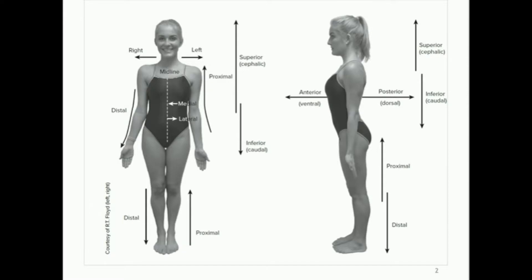If we're referring to something being closer to the head or further from the head towards the feet, we use superior and inferior respectively. If something is higher up, we call it superior; if it's lower down, inferior. For example, the heart is superior to the umbilical region, and the umbilical region is inferior to the heart.